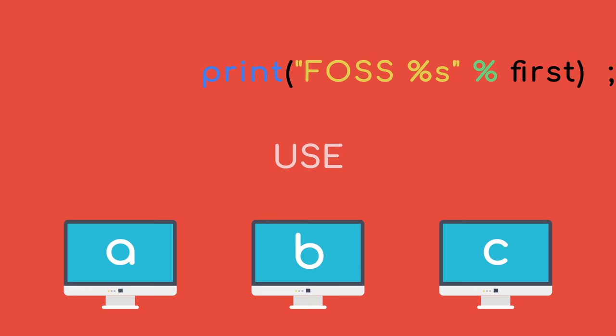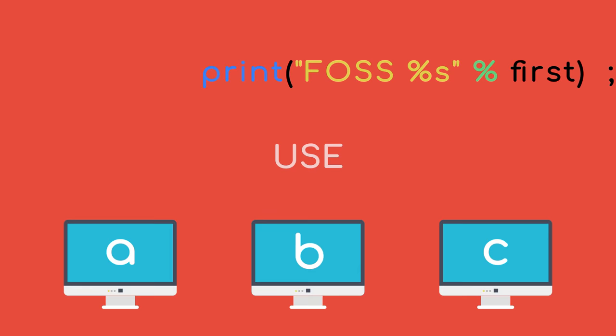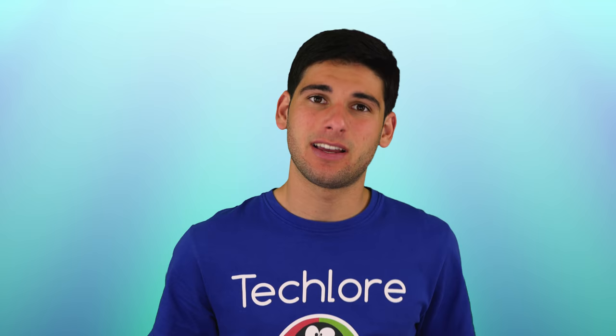FOSS isn't just a category of software — it's a movement. FOSS is any software that can be freely licensed to use, copy, study, and change in any way you want, while leaving the source code openly shared so people can voluntarily improve the software.